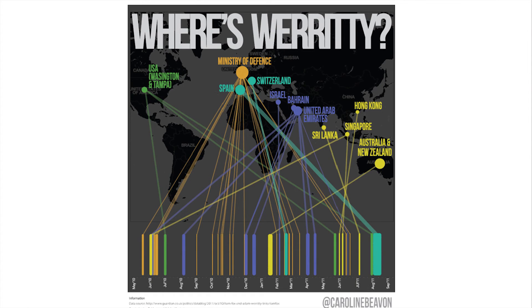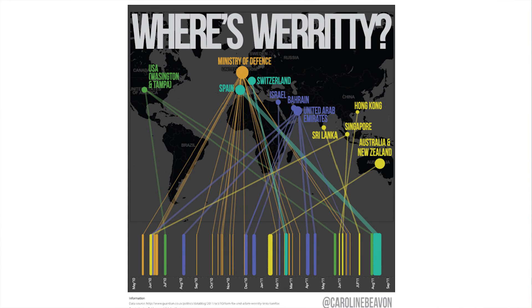Here's one final one I did ages ago. This was a story that broke in the news — must be five or six years ago. A chap called Adam Werity was a friend of Dr. Liam Fox, and this friend of his was taken on all these fancy trips all around the world. I plotted where he'd been — and there is a map under there, the black Tableau map — and a timeline of when he went there. That was created in Tableau, and then in Illustrator I drew the lines in between them. And that's it — thank you very much.